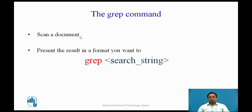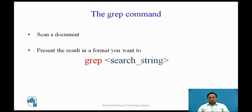One more command used consecutively with the pipe is the grep command. The grep command scans documents. If you want to use the grep command, you use it to search for a string in a file and present the result in the format you want. For example, suppose you want to search for a particular piece of information like a postal code from a text file — a better option is to use the grep command. It will scan the document for the desired information and present the result in the format you want. All of these — redirection, file descriptors, pipe, and grep commands — will be demonstrated using the Linux terminal.